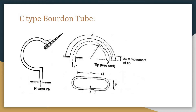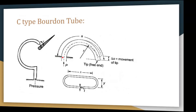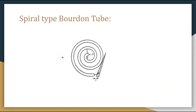The internal pressure tends to change the cross-section of the tube — it will bend in the direction shown by the arrow. The movement of the tip is ideally proportional to the pressure applied. As it bends, the tip moves along with it. Pressure is measured by inferring it in terms of displacement: as displacement increases, pressure also increases, and vice versa. This is the mechanism of the C-type Bourdon tube.